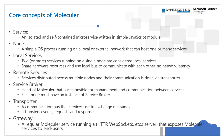Local services: two or more services running on a single node are considered local services because they can directly communicate with each other. They share hardware resources and use a local bus to communicate with no network latency since they are running within the same node. Remote services are distributed across multiple nodes and their communication is done via a transporter. If you have multiple services deployed in different nodes, they can communicate using transporters like NATS, AMQP or MQTT.